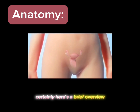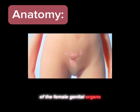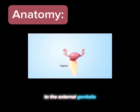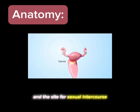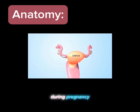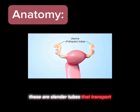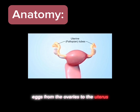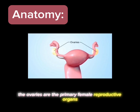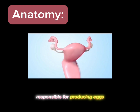The vagina is the muscular canal connecting the cervix to the external genitalia, serving as a birth canal and the site for sexual intercourse. The uterus is where a fertilized egg implants and develops into a fetus during pregnancy. The fallopian tubes are slender tubes that transport eggs from the ovaries to the uterus, where fertilization can occur. The ovaries are the primary female reproductive organs responsible for producing eggs (ova).